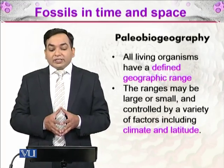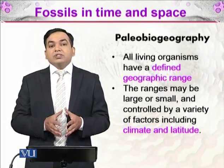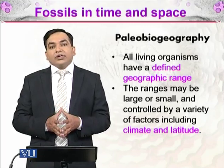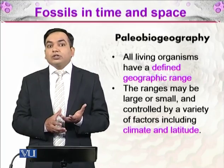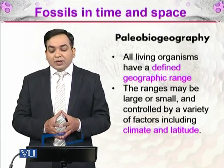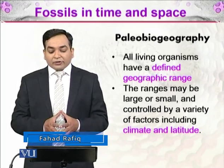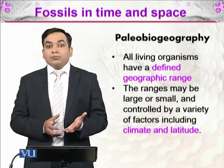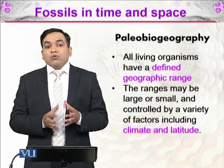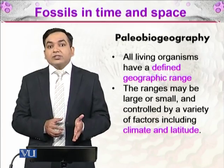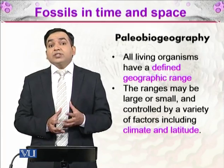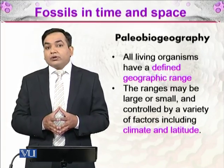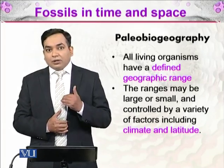In paleobiogeography, we study that all living organisms live in a defined geographic range. Every organism lives in its habitat, which is present in a particular geographic area. These ranges may be large or small and are controlled by a variety of factors, including climate and latitude. An organism found in a desert will not be found in a rainforest, because they have different climates and may have different latitudes. Climate refers to the year-round patterns of weather, while latitude describes how far a particular area is from the center of the earth.